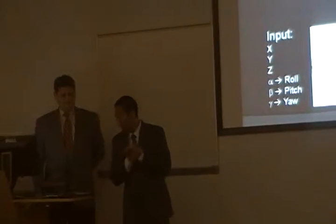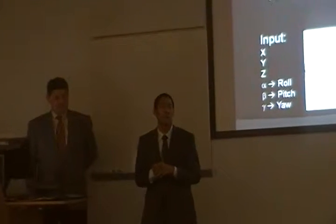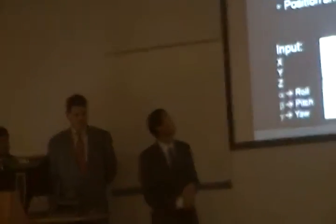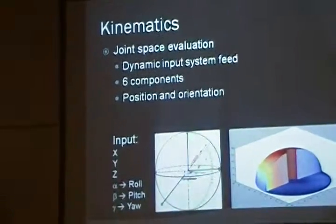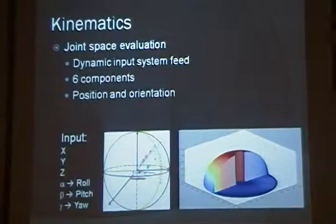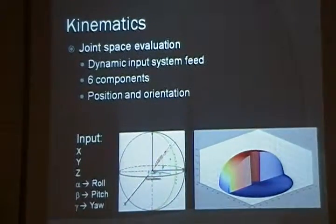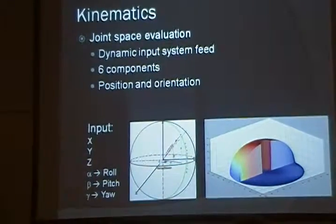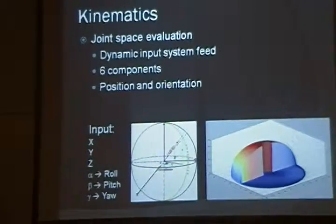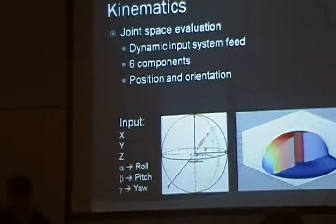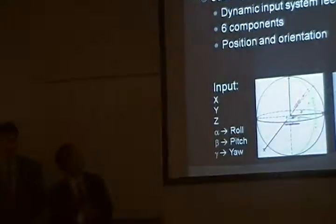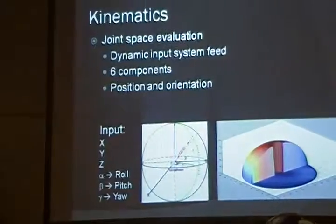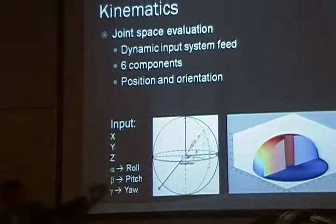In order for our system to evaluate where to move in joint space, we had to factor in position and orientation. And the fact that we wanted to move in joint space allowed us to use a dynamic input feed to the system, versus feeding separate angles to each motor and moving it that way. So, the six components that we need to feed to our system are x, y, z, alpha, beta, gamma, also known as roll, pitch, yaw.